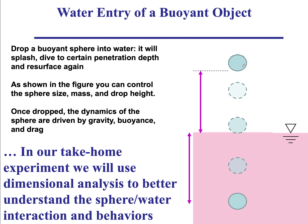The initial height L0 is the control parameter we want to play with across our four entry objects. The sphere, after dropping into water, will dive to a maximum depth L — the penetration length. The sphere has diameter d, mass m, and density rho_s, while the liquid has viscosity mu and density rho.